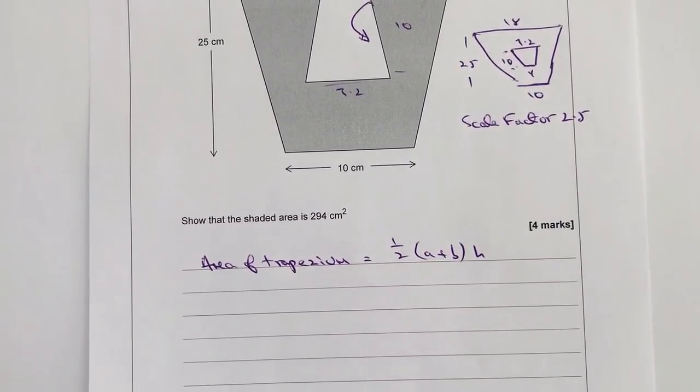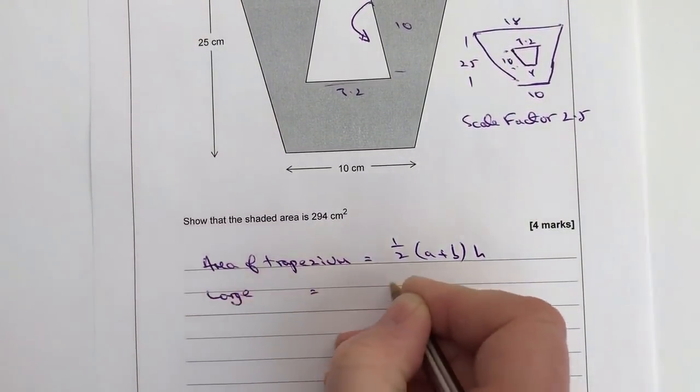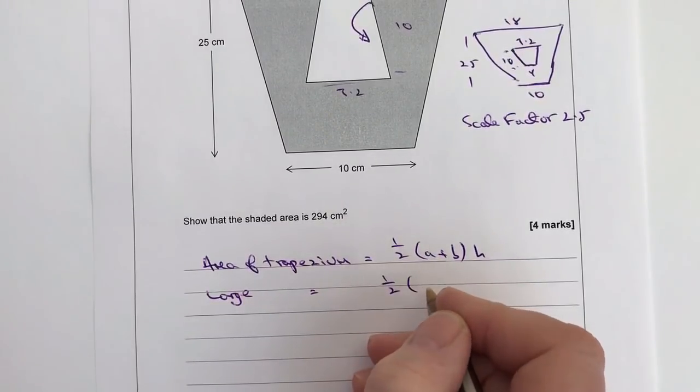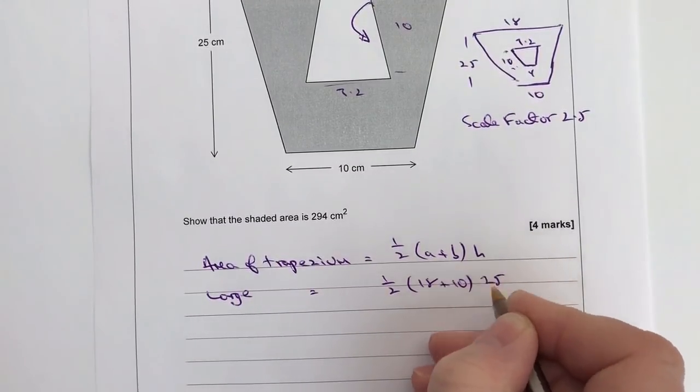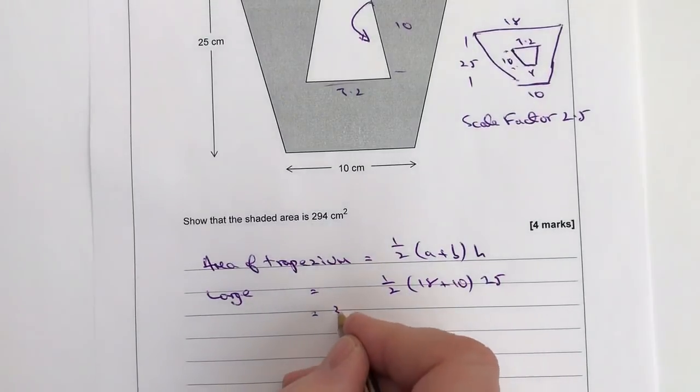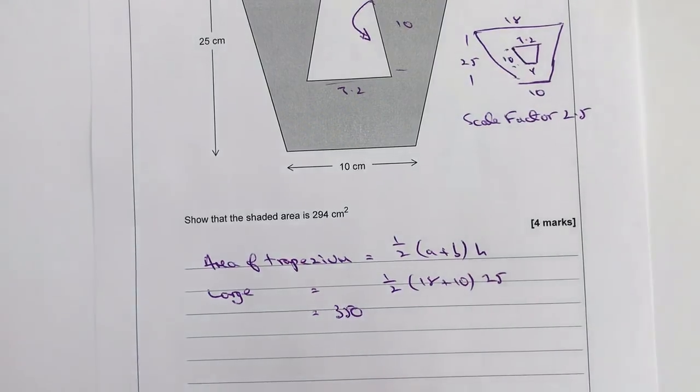So let's just plug those numbers in. So the large one is going to be equal to a half, a is going to be 18, b is going to be 10, and h is going to be 25. And if I pop that in my calculator, I'm going to get an area of the large trapezium of 350 centimeters squared.